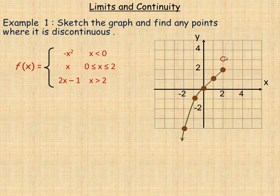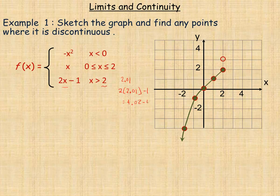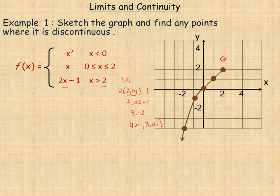Points just to the immediate right of x equals two would be on the graph. For example, using 2.01 — that's very slightly larger than two — we get two times 2.01 minus one, which equals 4.02 minus one, or 3.02. So the point (2.01, 3.02) is on the graph, just very slightly to the right of that open circle. The open circle indicates where the graph starts approaching from the right, but isn't actually a point on the graph.